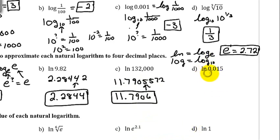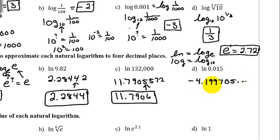The last example is the natural log of 0.015. Push the natural log button and type in 0.015; when you hit enter we get negative 4.199705 and more digits. We want four decimal places, which is the 7 position. The number immediately following is a 0, so we leave that 7 alone, and our final answer is negative 4.1997.